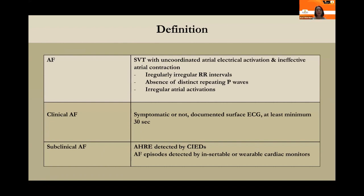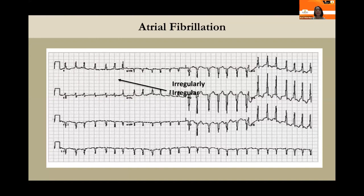The ESC 2020 guideline defines atrial fibrillation as a supraventricular arrhythmia with uncoordinated atrial electrical activation and ineffective atrial contraction, manifesting as irregularly irregular RR intervals, absence of distinct repeating P waves, and irregular atrial activation. Clinical AF requires at least 30 seconds of recorded AF, with or without symptoms. Subclinical AF is detected by implantable or wearable cardiac monitors such as CIEDs — cardiac implantable electronic devices.